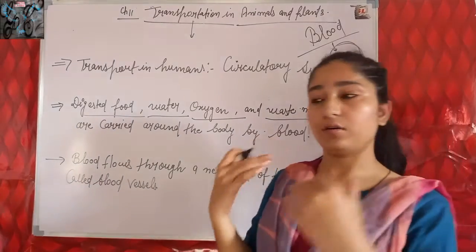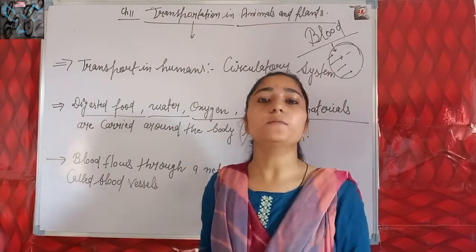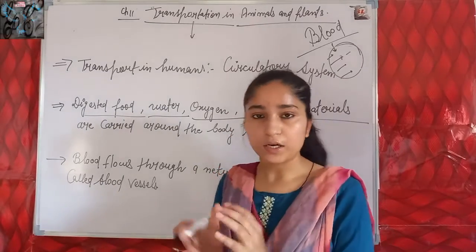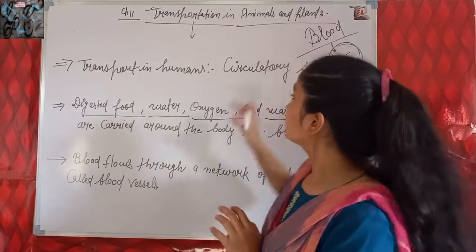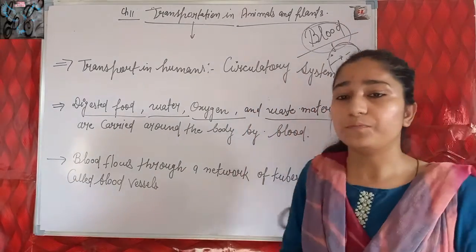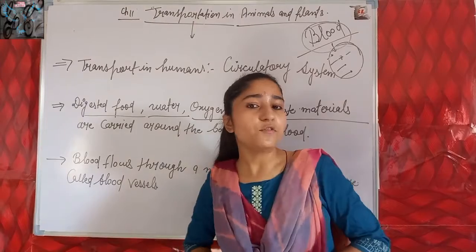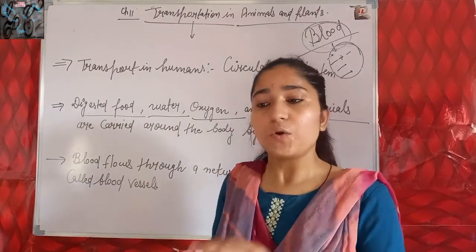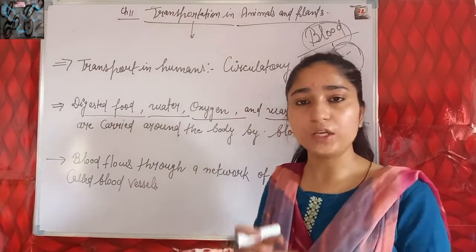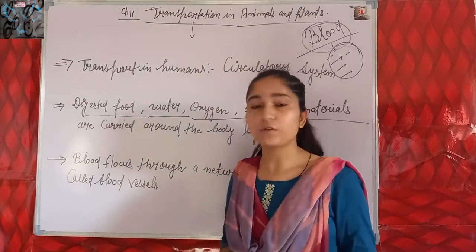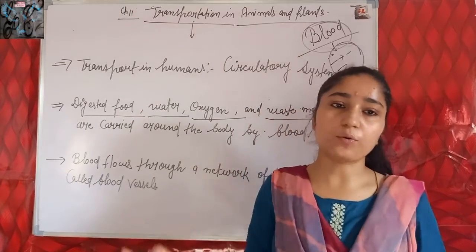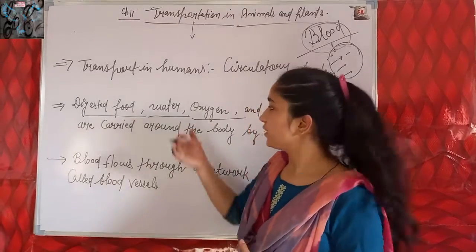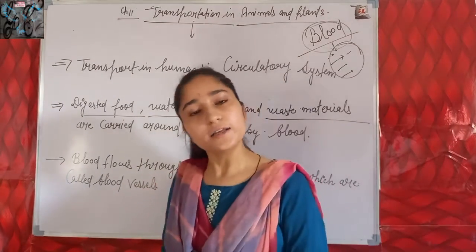In this chapter we will study about blood - what is blood and from what substances blood is made of - and about the heart. With the help of the heart, blood is pumped out to the whole body and to each part of the body, so blood reaches every part, and with its help all substances are carried from one place to another.